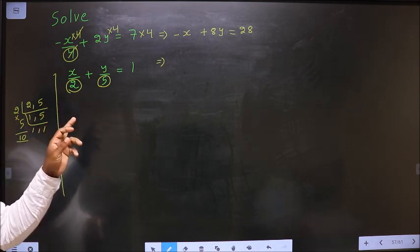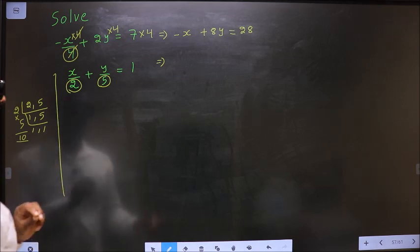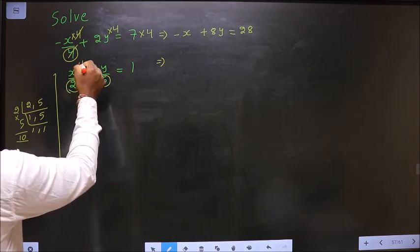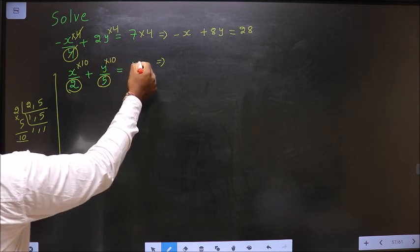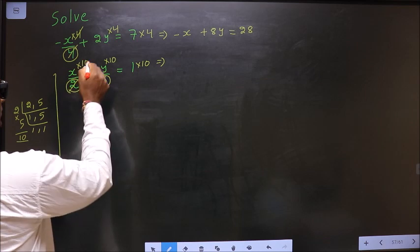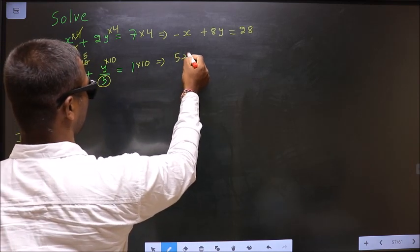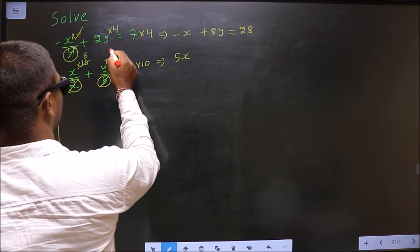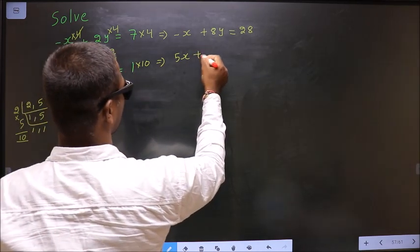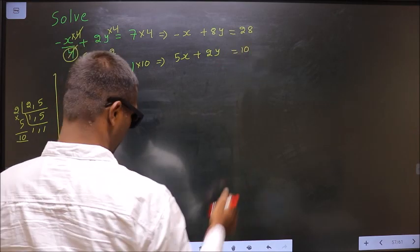So to get rid of the denominators, multiply by 10 to each term. Into 10, into 10, into 10. So this equation now becomes 5x plus 2y equal to 1 times 10 is 10.